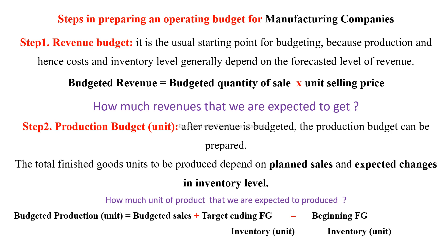Next is the production budget. This answers how much you need to produce in order to achieve the expected revenue. The total finished goods units to be produced depends on planned sales and the expected change in inventory level. We need to determine the budgeted production units.